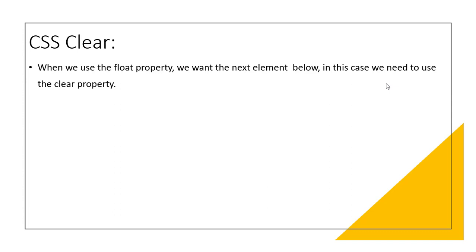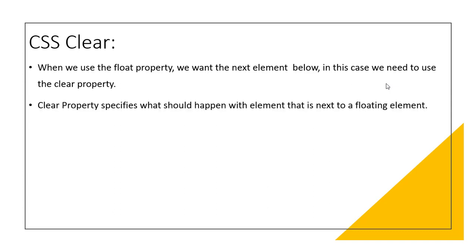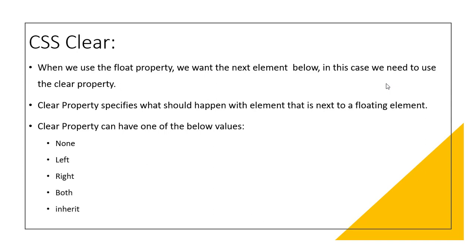In this case we need to use the clear property. Now we need to use the float property more. For example, a paragraph element is a due element. If you apply float left, you can also use a paragraph for the element. If you want to use the clear property, let's first understand the theory. The clear property specifies what should happen with the element that is next to a floating element. Clear property can have these values: none, left, right, both, and inherit.